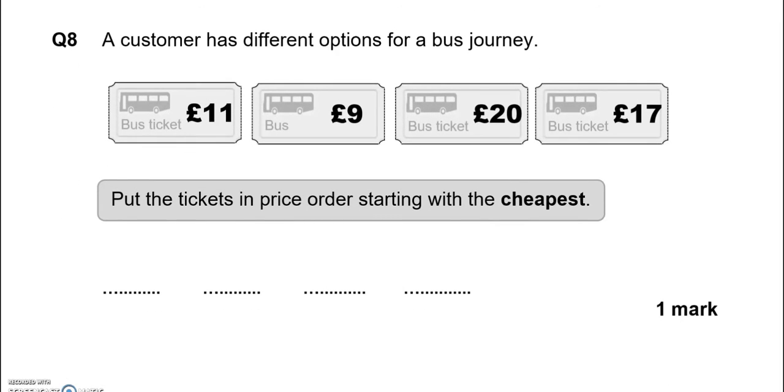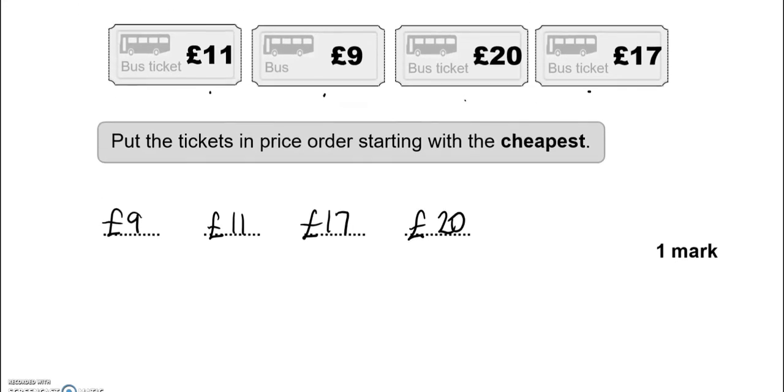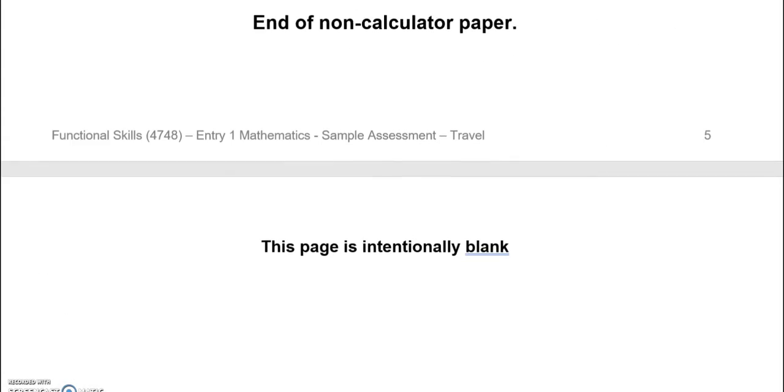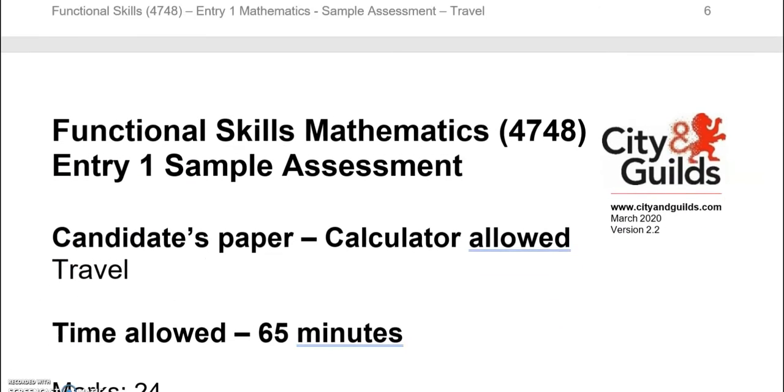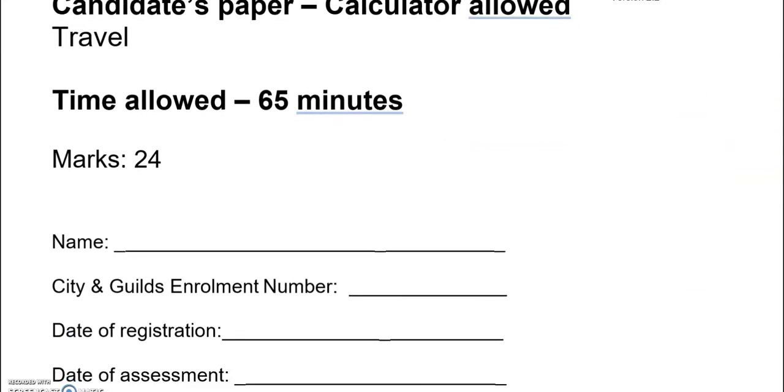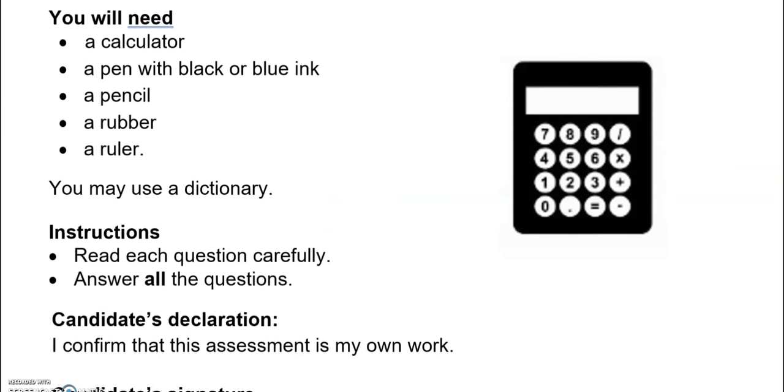A customer has different options for a bus journey. £11, £9, £20, £17. This is the end of the first part. We'll now look at the second part of this paper where you can use a calculator. There are 24 marks in total for this part.